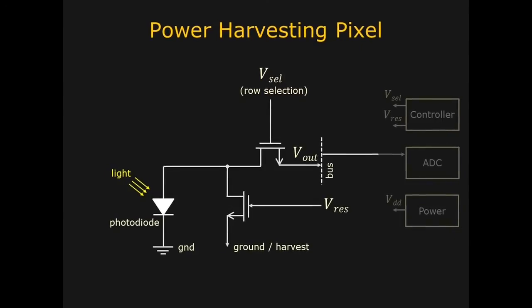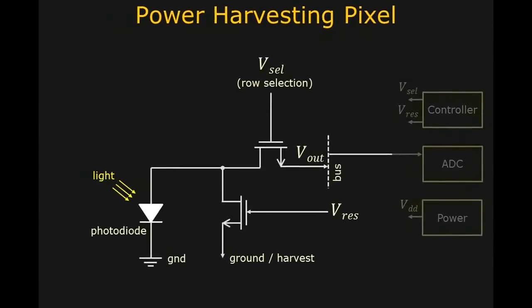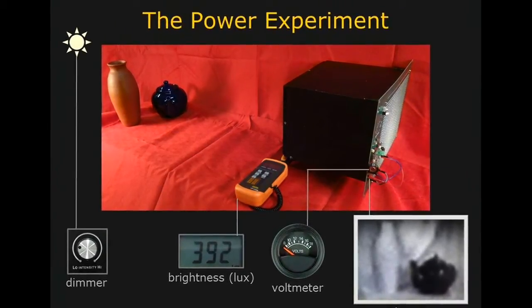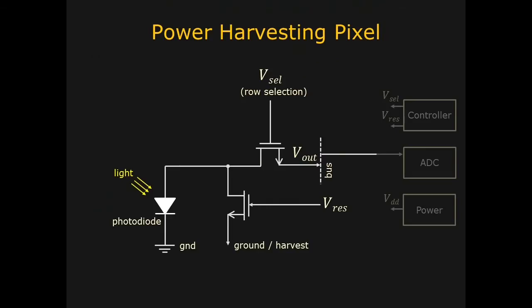They have designed a pixel circuit where the pixel's photodiode can be used to not only measure the incident light level, but also to convert the incident light into electrical energy. That is, the same photodiode can be used as both camera part and solar cell.